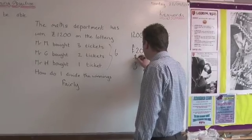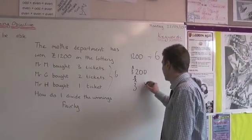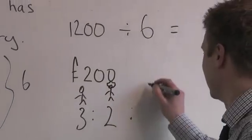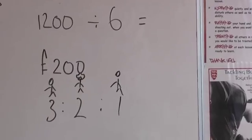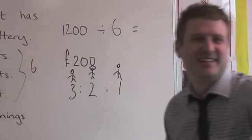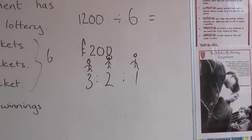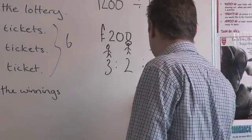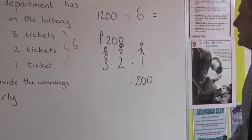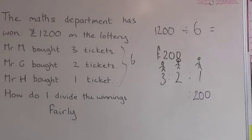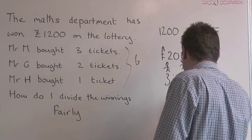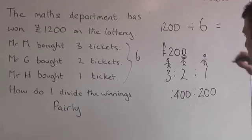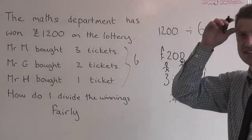Mr Middleton's bought three tickets — lucky Mr Middleton. Mr Gill, with his curly hair, has bought two tickets. And Mr Hudson at the end has bought one. If I've bought one ticket and each ticket's worth 200 pounds, how much have I earned? 200 pounds. Mr Gill has bought two tickets — if one ticket's 200, that's four hundred pounds. Mr Middleton the clever man has bought three tickets — how much is that going to be worth? Six hundred pounds.